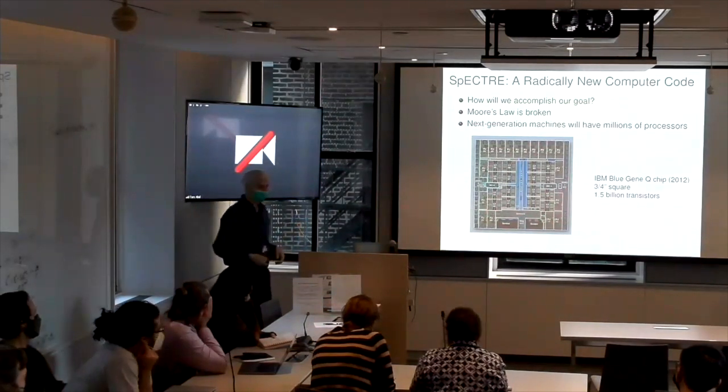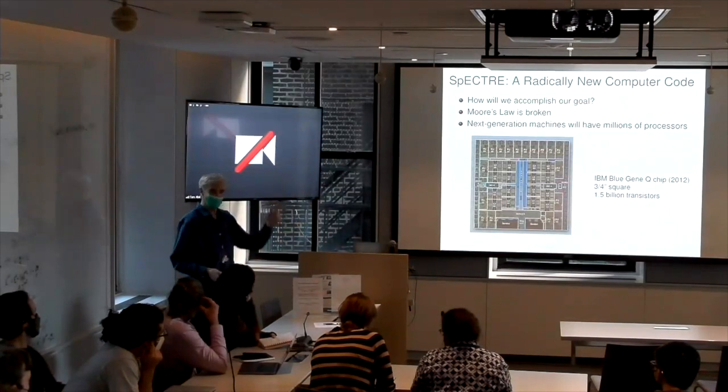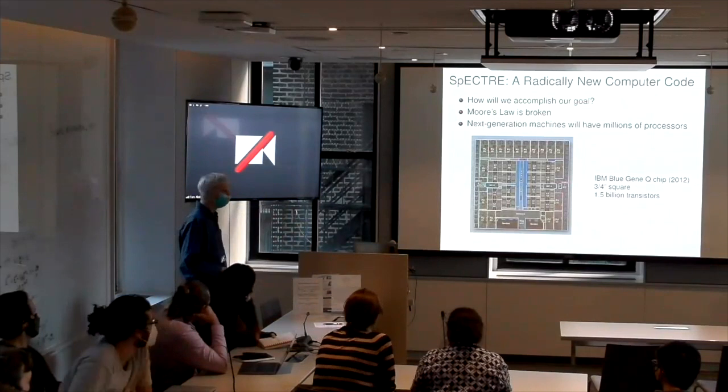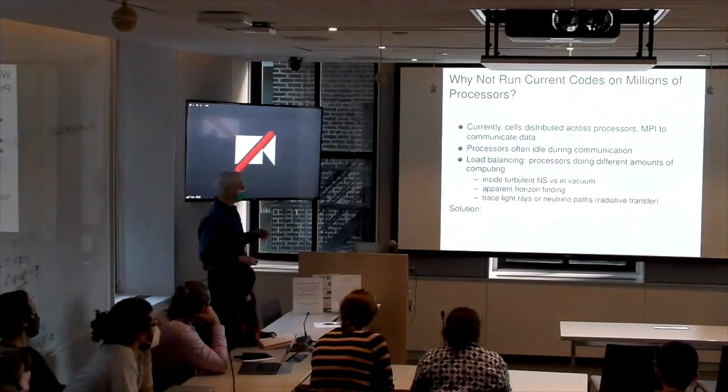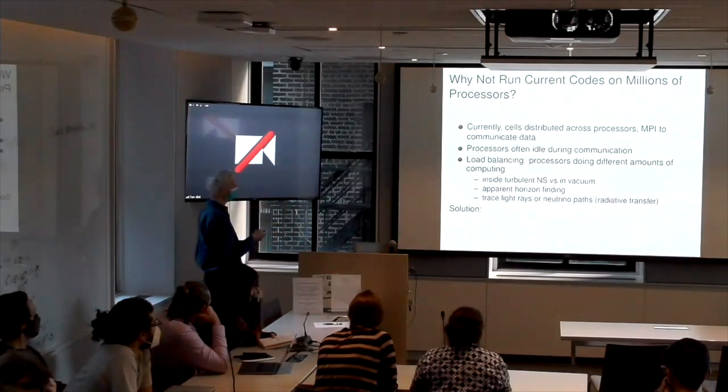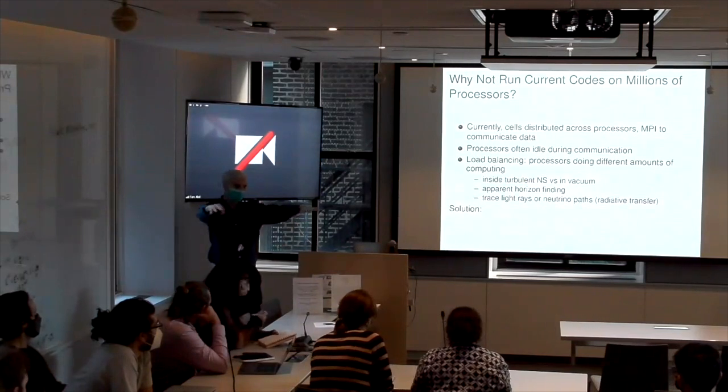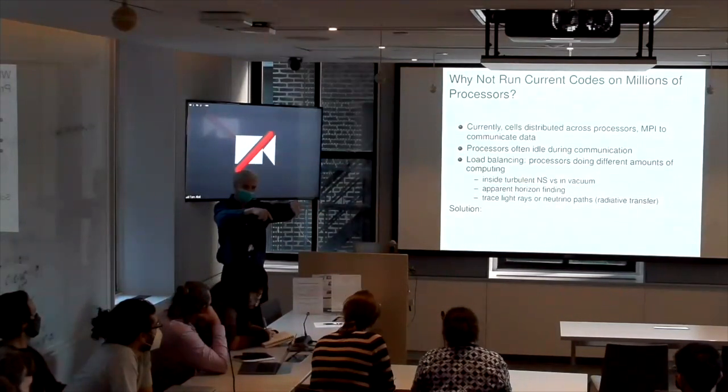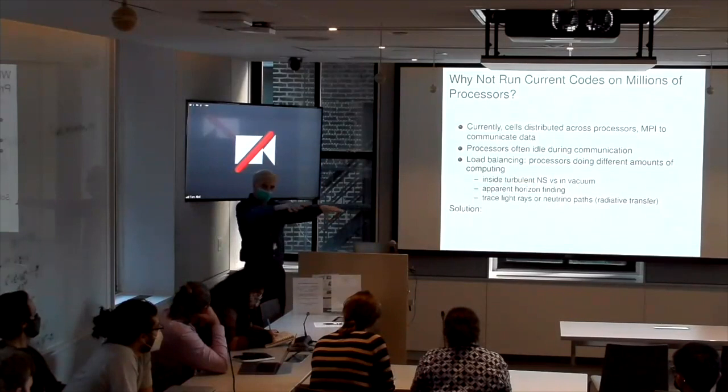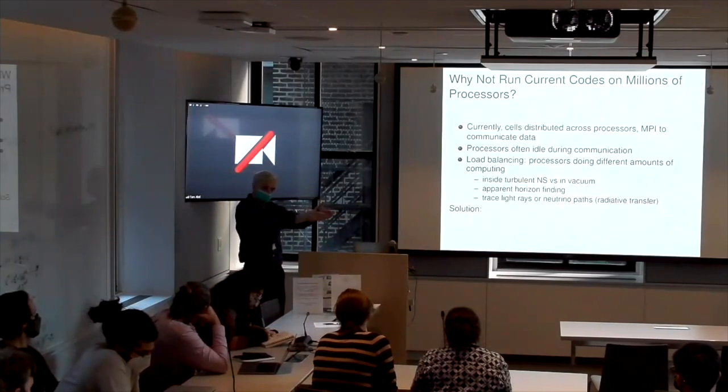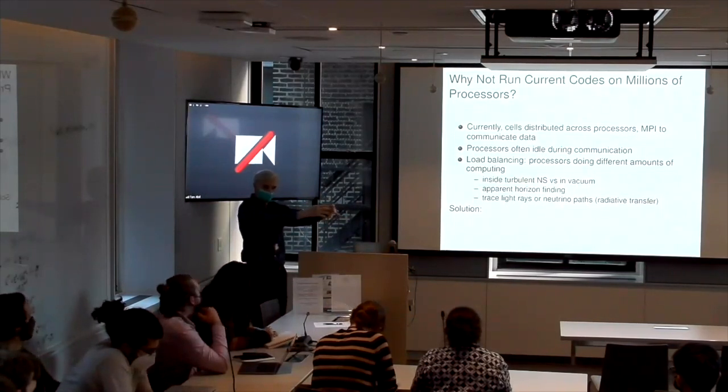So modern machines, those of you who have looked on Terra and so on, know that it's not 16 anymore. It's 128, 256. I'm not talking about GPUs. So why can't we take our current codes and run them on millions of processes? And it's because of the way we parallelize things. We have our spatial grid. We divide it up into subdomains. And then we distribute the subdomains to different processors. And then all the calculations that have to be done on one particular subdomain are handled by that processor that it resides on.